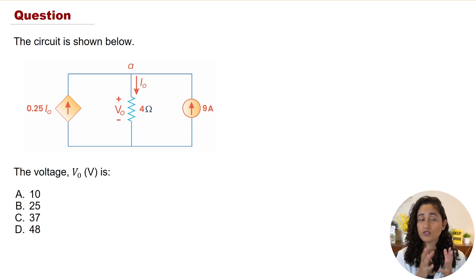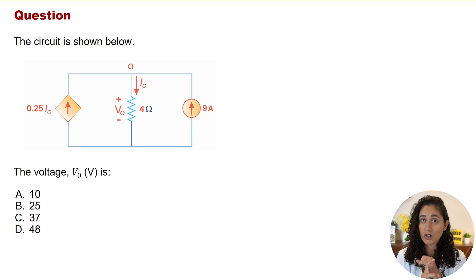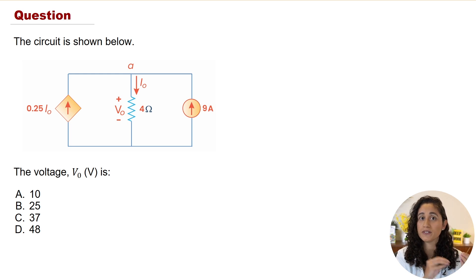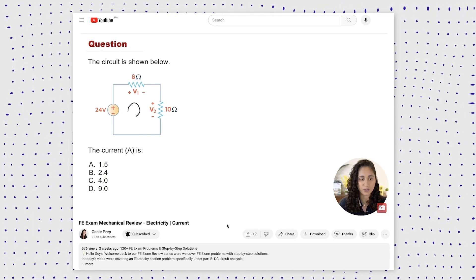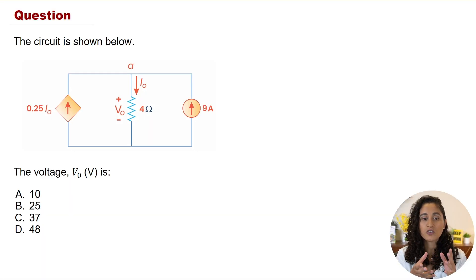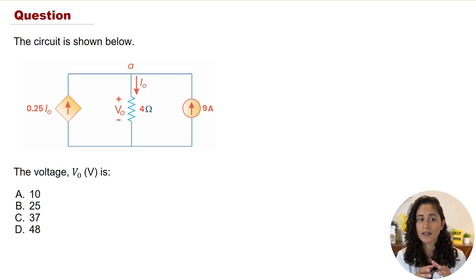So we are given this circuit and we want to determine the voltage V_naught. What you need to do is first apply Ohm's law and then apply Kirchhoff's Current Law (KCL) at node A. This is similar to a previous example on our channel where we had to find the current — except here we need to determine the voltage. Go ahead and pause this video, give it a try, and then come back to check your solution.